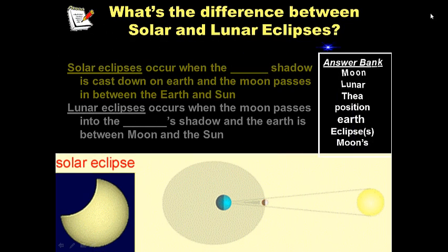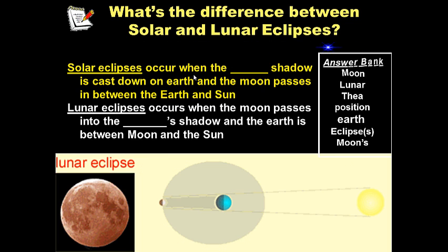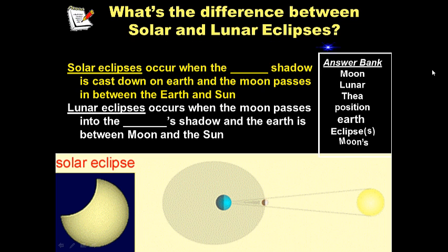So on your notes, what's the difference between solar and lunar eclipses? Remember eclipses are rare. These events only happen once, maybe twice a year. Solar eclipses are especially rare. Determine which words go in your answer bank please. Go ahead and pause it. We're going to move on.